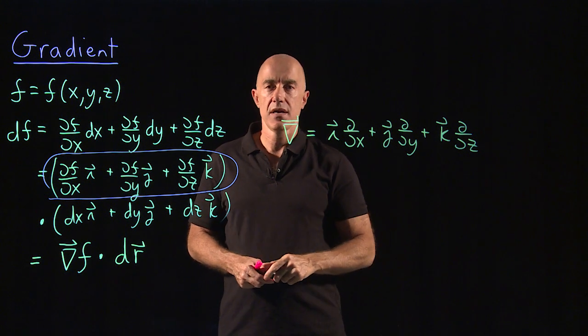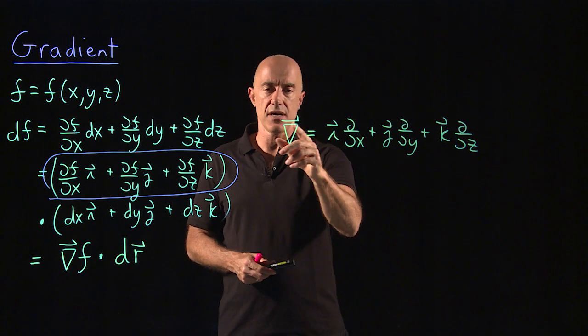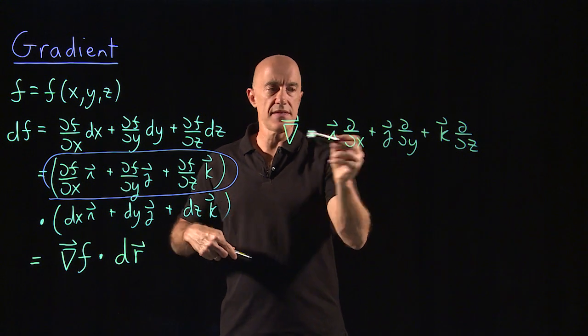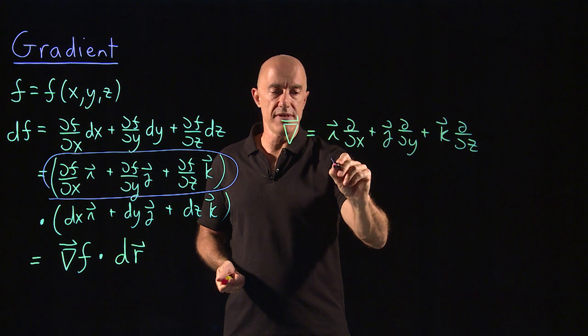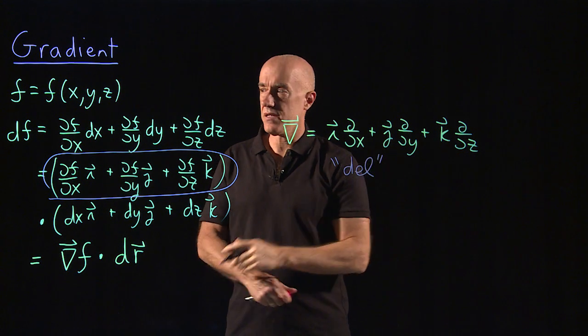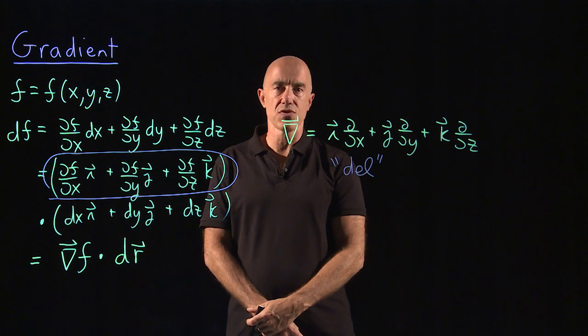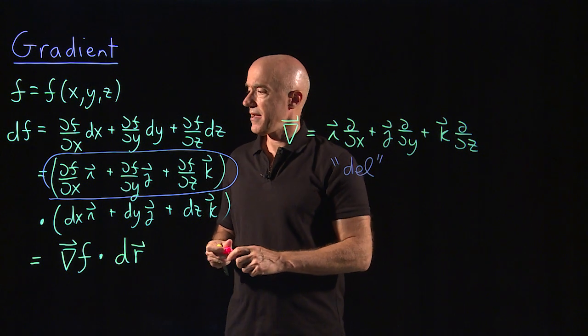It's useful sometimes in doing some algebra with these gradients. I should say that this has a name, this operator goes by the name of del. D-E-L, del. So the gradient of f is sometimes called del f. Let's look at an example.